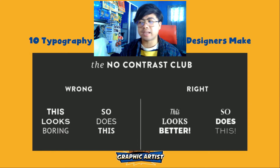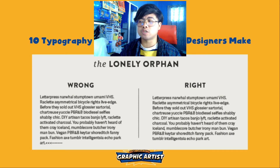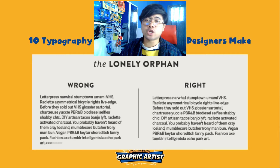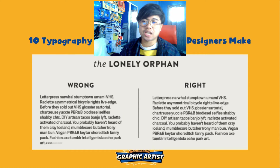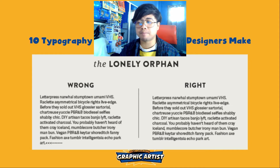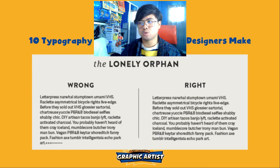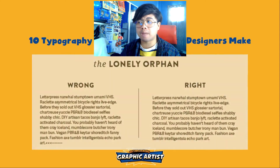Mistake number four: the no contrast club. On the left side everything looks the same and boring, but on the right side a twist is applied with different styles on each text element, which looks much better. Mistake number five: the lonely orphan. On the left side, the word 'art' is left alone on its own line at the bottom, separated from the rest. This is called a lonely orphan and should be avoided. On the right side, a way was found to keep all the text together so nothing is stranded alone at the bottom.